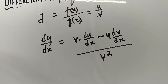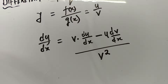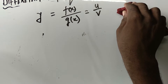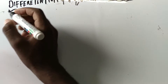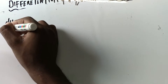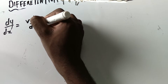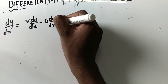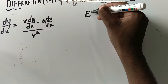This is the formula for the quotient rule. When we have two functions of x in this form, we apply this formula. Let me write the formula here for convenience: dy/dx equals v·(du/dx) minus u·(dv/dx), divided by v squared. Now let's look at Example 1.